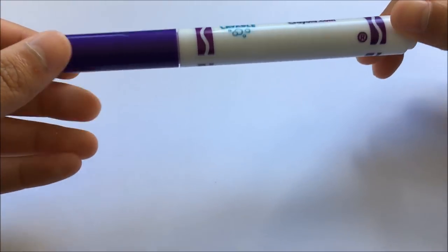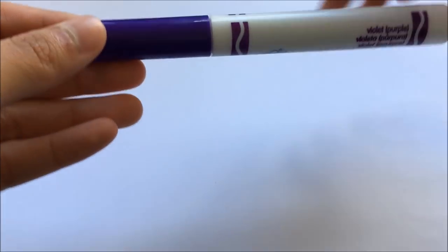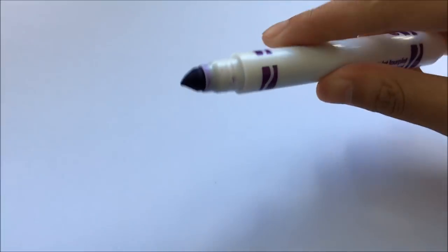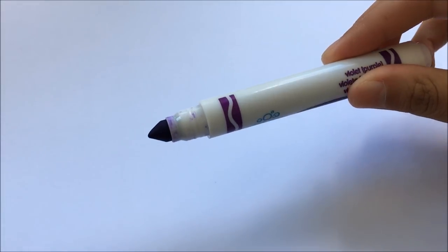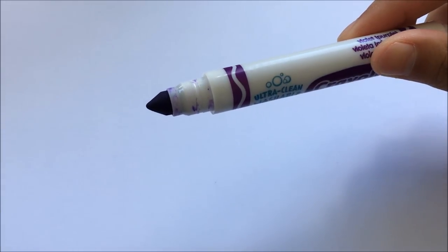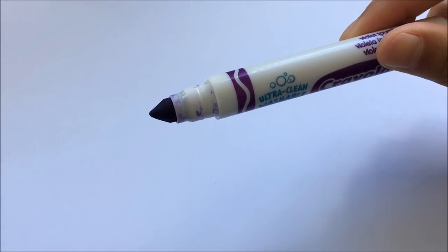All you'll need for this is a Crayola marker, or any other marker with a similar cone-shaped tip. You've probably noticed that my marker looks really smushed on one side, and that's because of the way I apply pressure on the tip while doing calligraphy.